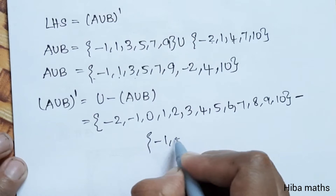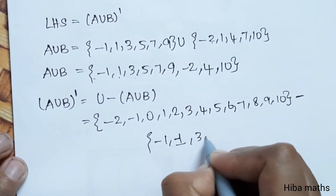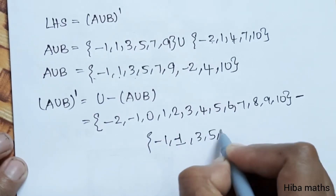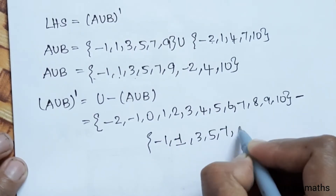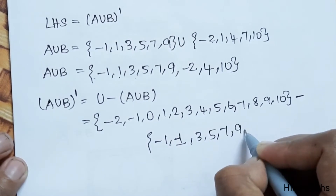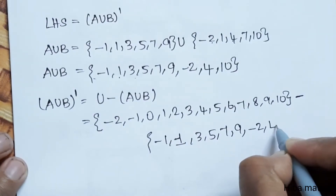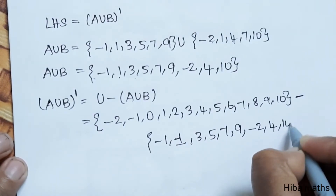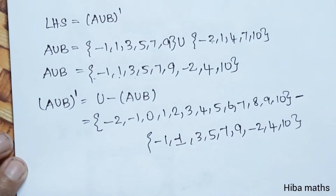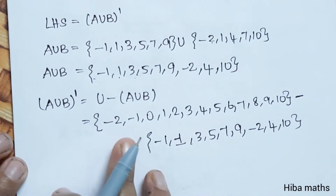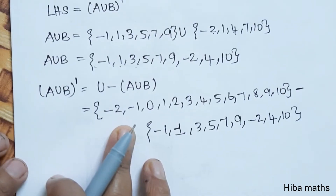Computing the complement of A union B: U minus A union B. Elements in U but not in A union B. Checking each element: -1 is in, 1 is in, 3 is in, 5 is in, 7 is in, 9 is in; -2, 4, 7, 9, -2 also in the union.